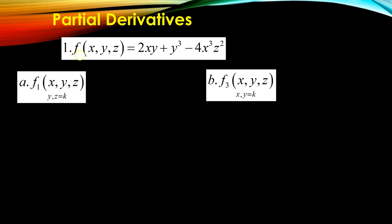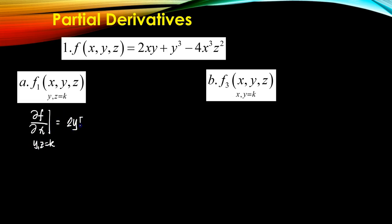Let's go to some examples. For example number 1, f(x, y, z) = 2xy + y³ − 4x³z². In part A, you're asked to solve for the partial derivative with respect to x, so y and z are treated as constants. Since y and z are constants, I can factor out 2y, the derivative of x with respect to x is 1, and y³ becomes 0. For the last term, 4z² is a constant and the derivative of x³ is 3x². So the answer is 2y − 12x²z².